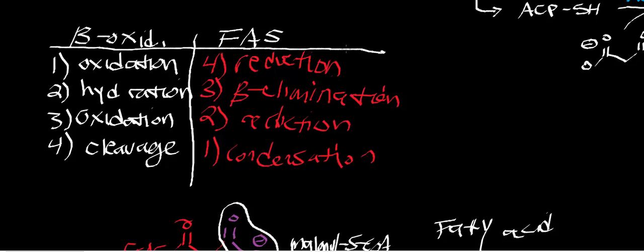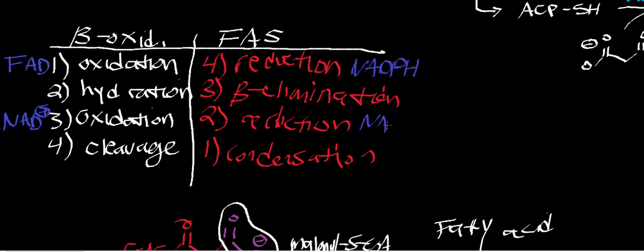In beta-oxidation, the first oxidation was FAD-dependent, catalyzed by fatty acyl-CoA dehydrogenase. The third oxidation, catalyzed by beta-hydroxyacyl-CoA dehydrogenase, was NAD-dependent. The reductions in fatty acid synthase, however, are both NADPH-dependent — the reducing equivalents come from the hydride of NADPH. So in order to run fatty acid synthase, you must have NADPH present.